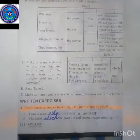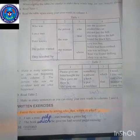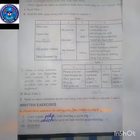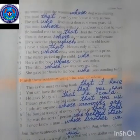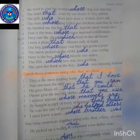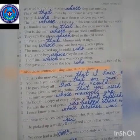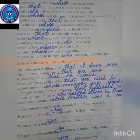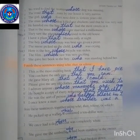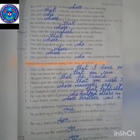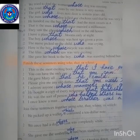Now students, look at Activity A: finish these sentences by adding 'who', 'that', 'whose', or 'which'. Number one: I saw a man who was wearing a green hat. Number two: The book which he gave me had several pages missing. Number three: We tried to find the woman whose dog was missing. Number four: The road that runs by our house is very narrow. Number five: The girl who lives next door is 16 years old. Number six: The man whose dog killed our chickens said that he was very sorry. Number seven: He handed me the bag that had the most sweets in it. Number eight: That is the man whose sister married a millionaire. Number nine: They saw the ghost which lived in the old house. Number ten: I have a plant that blooms only at night.